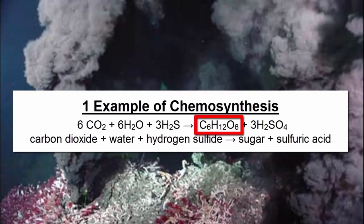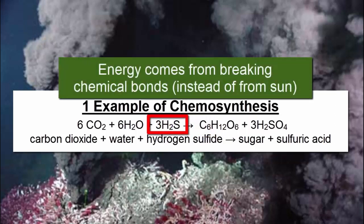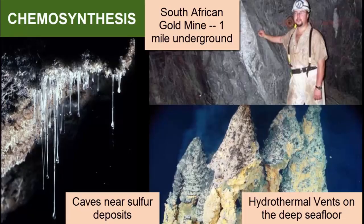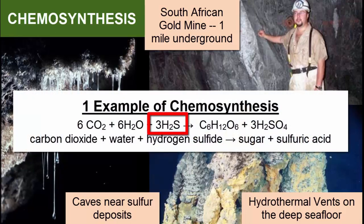Instead of harnessing energy from the Sun, chemosynthesis harnesses energy held within chemical bonds of gases and minerals. We see chemosynthesis happening today in a number of dark locations, including deep in underground mines, at the bottom of the sea floor where gases seep out of cracks and sediments, and in caves near sulfur-rich mineral deposits. In all these locations, autotrophs use energy to combine surrounding ingredients and form sugars. Any of these locations could have been the cradles in which early life formed on Earth.